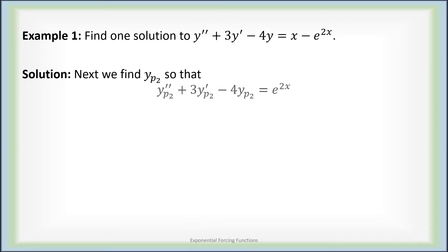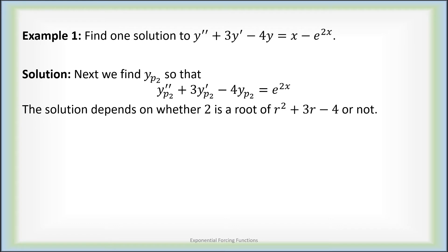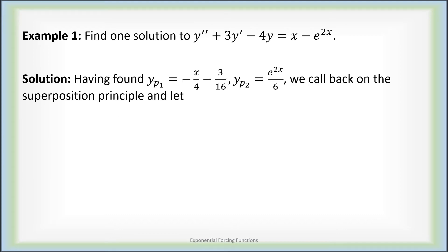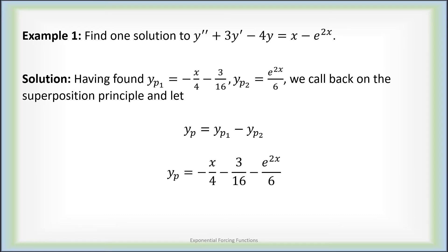Next, we want to find yp2 so that if we throw it into the differential equation, it produces e to the 2x. How to proceed depends very much on whether 2 is or is not a root of the complementary polynomial — it's not. So all we have to do is set yp2 to be some multiple of e to the 2x, where capital A is given by 1 over the complementary polynomial evaluated at 2, which is just 1/6. So yp2 is e to the 2x over 6. By the superposition principle, yp equals negative x/4 minus 3/16 minus e to the 2x over 6.